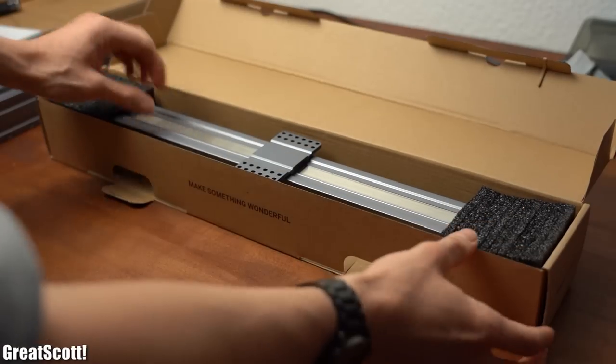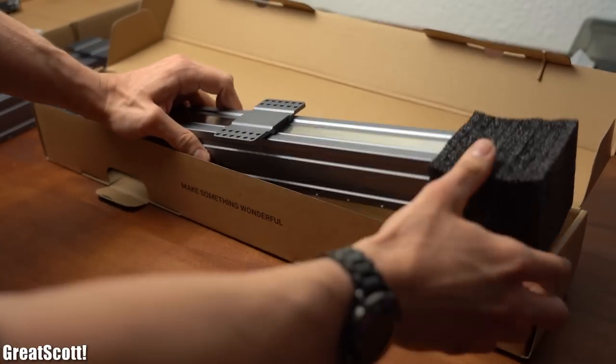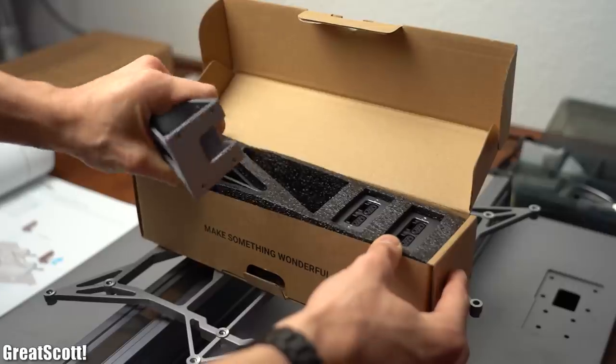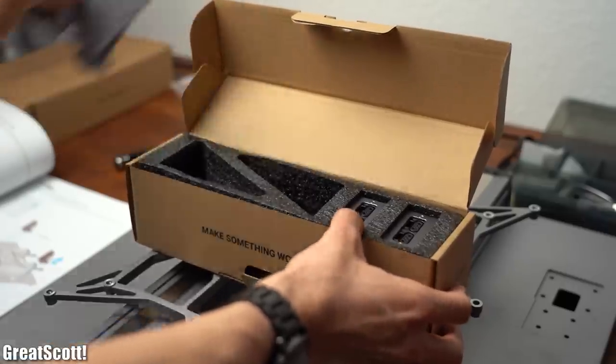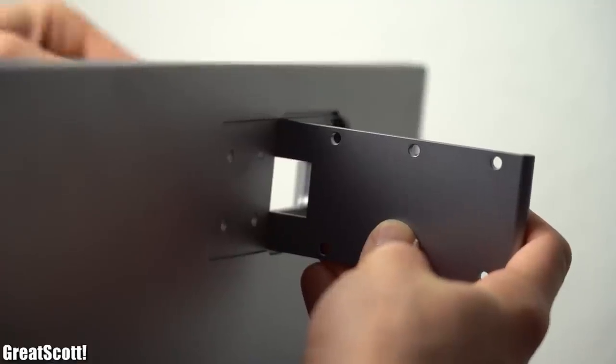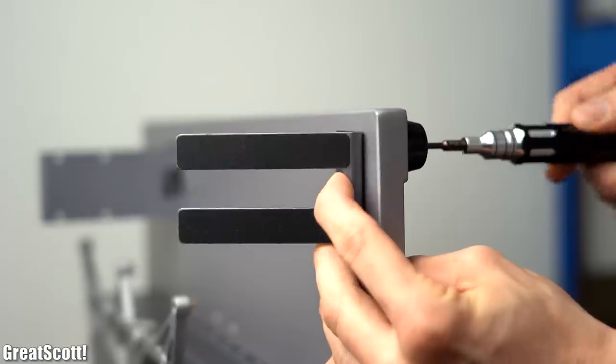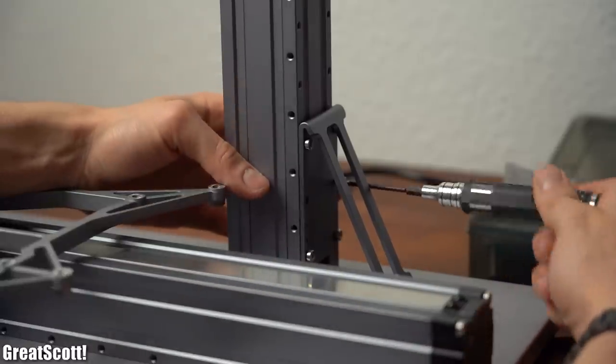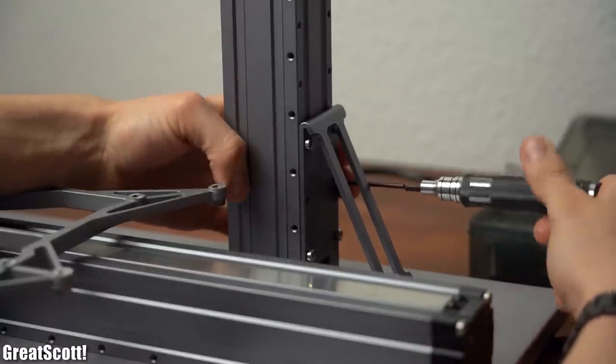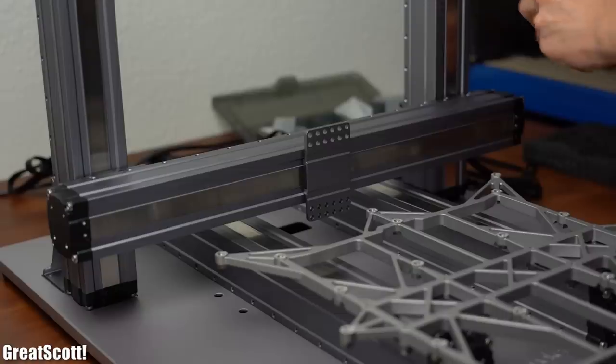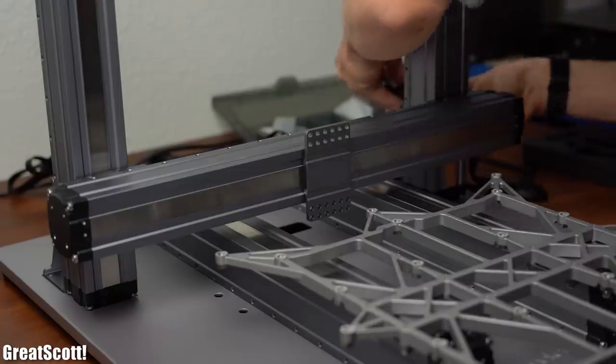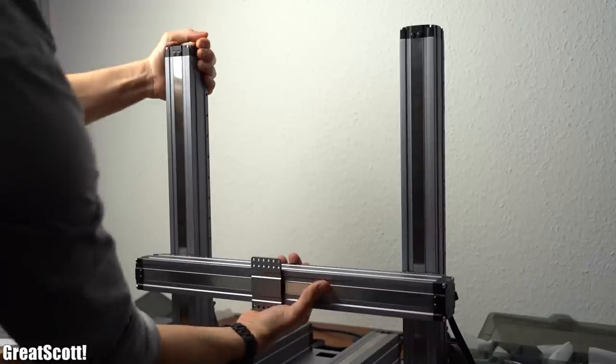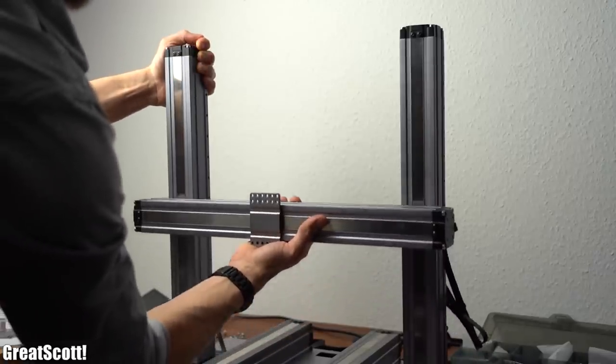But anyway next I unpacked two linear rails which I secured to the base plate. Then I got myself the metal brackets and attached them to the base plate as well. After then also adding the touchscreen holder it was time to mount the Z-axis linear rails to the metal brackets. The last linear rail for the tool heads was then secured to the Z-axis rails and just like that the main structure was complete.